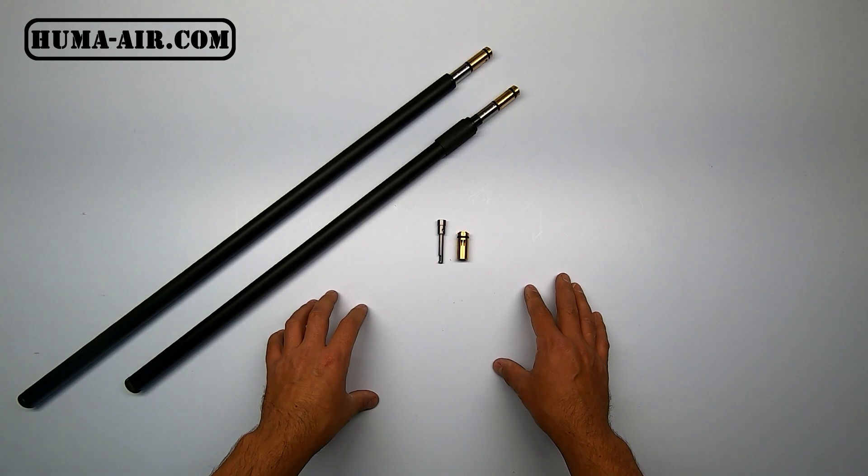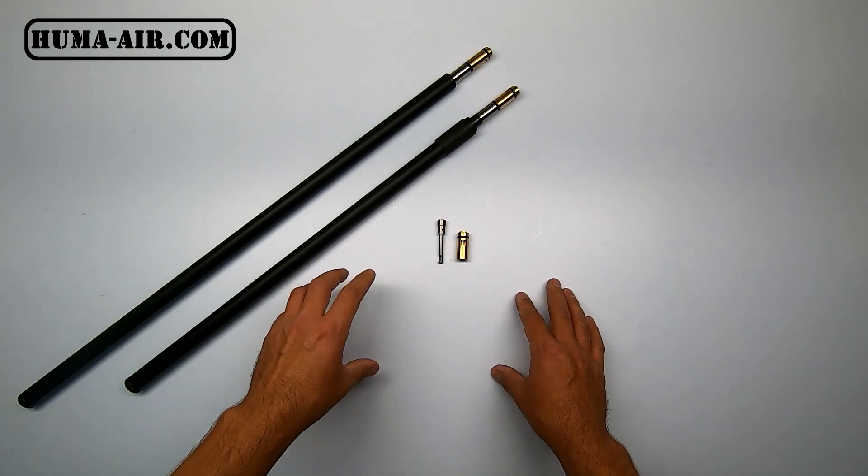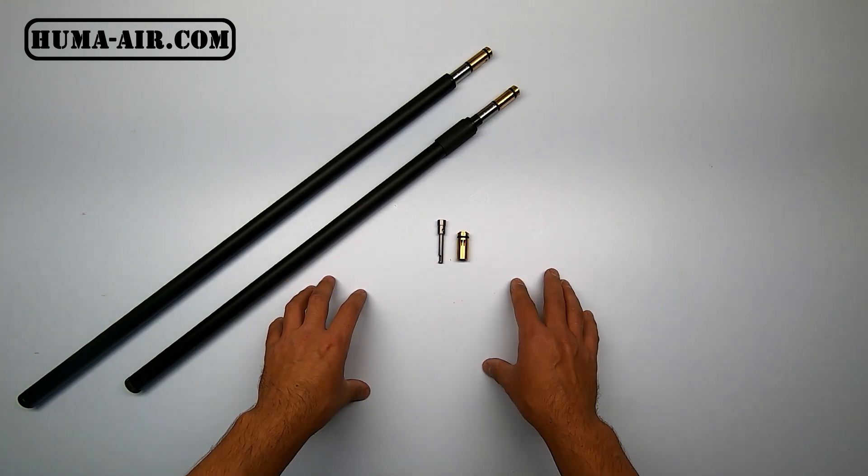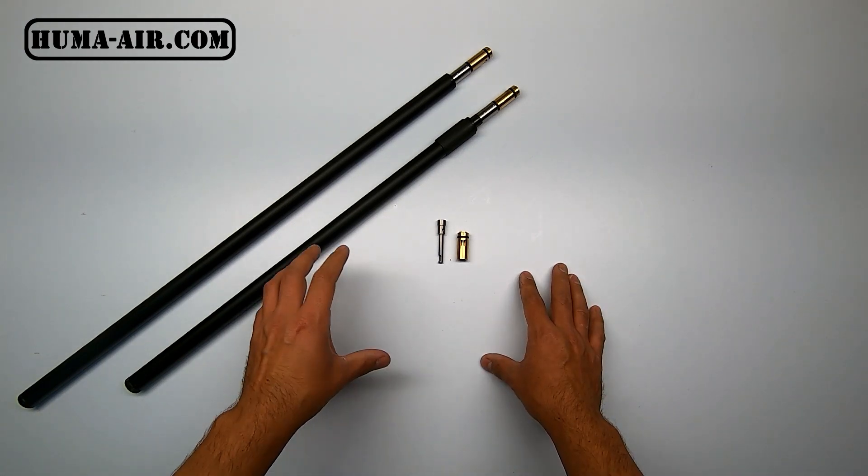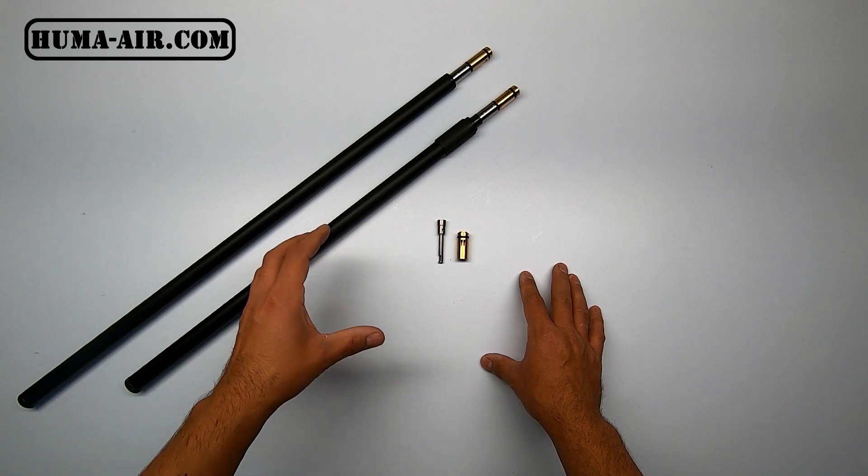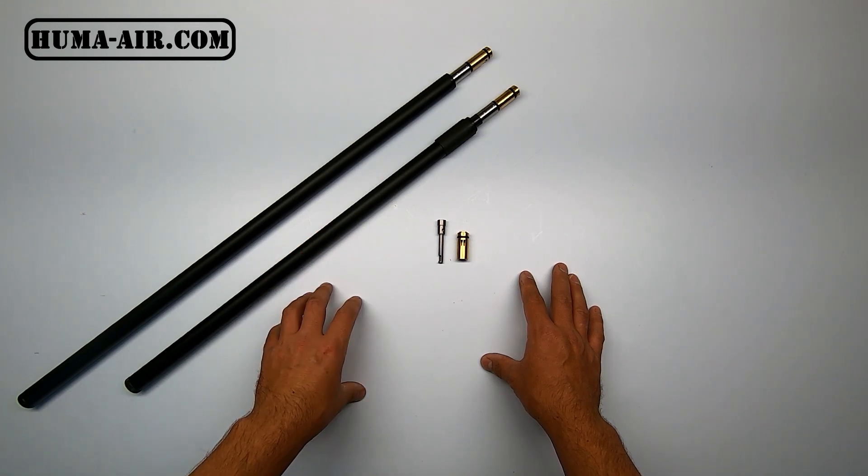Installation process on all the FX barrels is exactly the same except for the super light ones because it's a little bit different to remove the pellet liner. I have a link up in the corner of the screen where you can see how to remove the pellet liner on my FX Dreamline Tactical Compact and any other super light barrel.